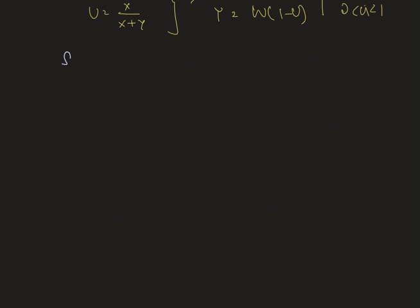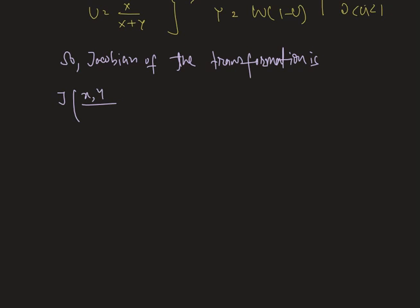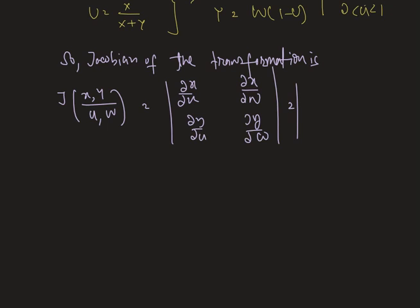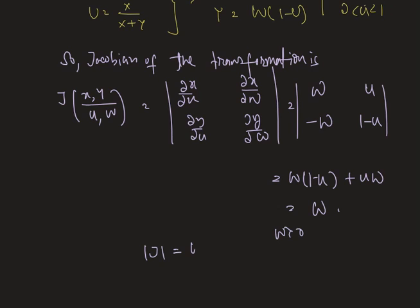So the Jacobian of the transformation is Jacobian of x comma y divided by u comma w, which is nothing but del x del u, del x del w, del y del u, and del y del w. So we get w, u minus w, or 1 minus u. Hence w into 1 minus u plus u w, and this is nothing but w. Now as w is greater than 0, therefore the mod Jacobian is w.